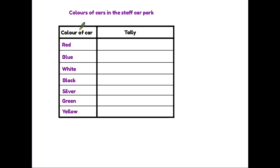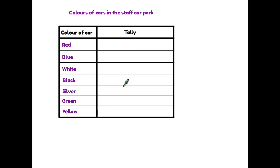Here on the screen we have a table that is already set out as a tally chart. We have a title — it's all about the colors of cars in a staff car park. Down the left we have a column for the colors of the different cars, and the main wider column is where we are going to do our counting.